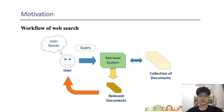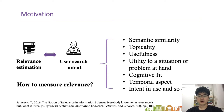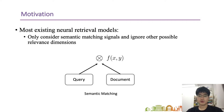Here is the workflow of web search. When a user submits a query to a retrieval system, the system needs to retrieve relevant documents. However, how can we measure the relevance? According to previous studies, relevance should involve different dimensions such as semantic similarity, topical relatedness, usefulness, and so on. When we look back to most existing neural retrieval models, we find that most of them only consider semantic matching signal between query and document, and do not take other possible relevance dimensions into consideration.